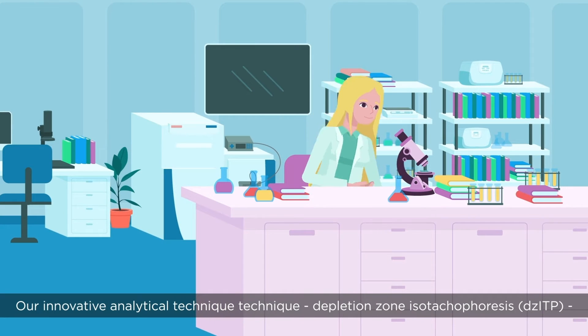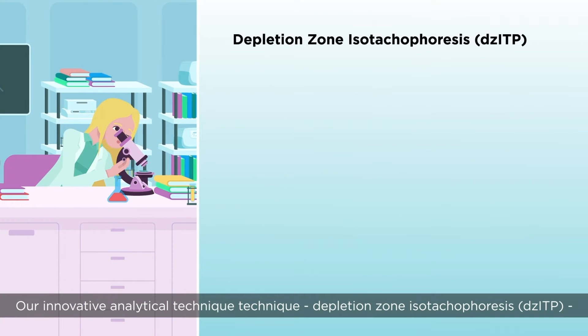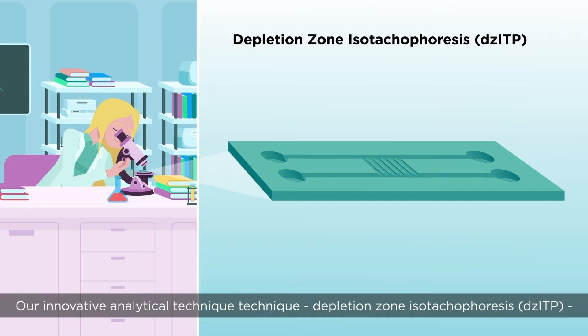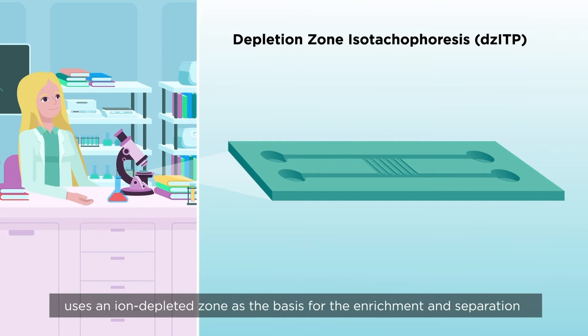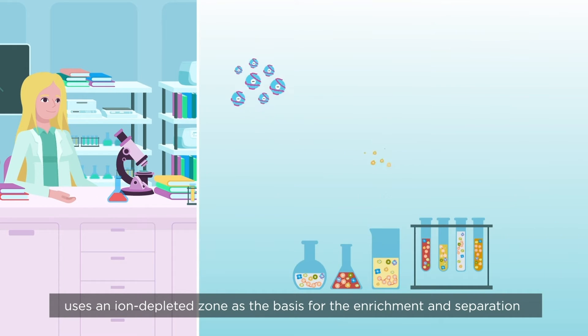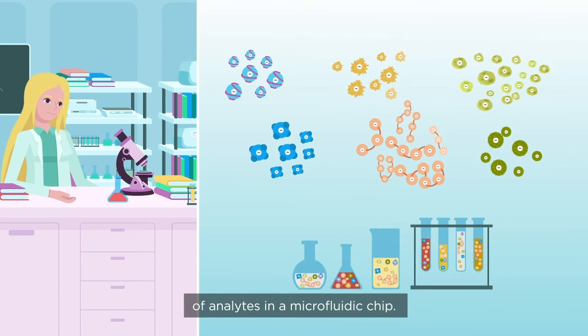Our innovative analytical technique, Depletion Zone Isotachyphoresis, or DZITP, uses an ion-depleted zone as the basis for the enrichment and separation of analytes in a microfluidic chip.